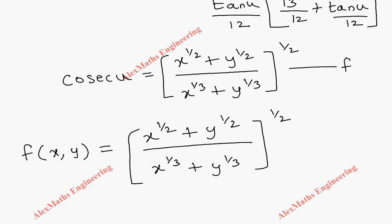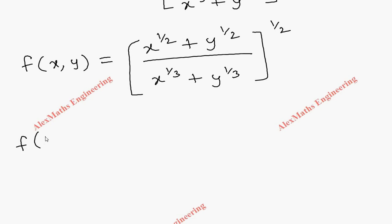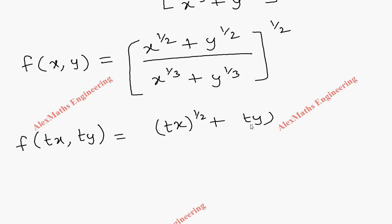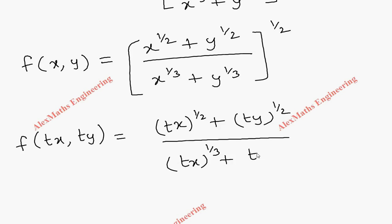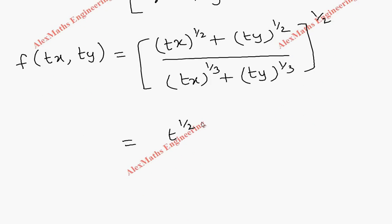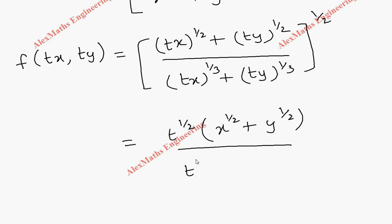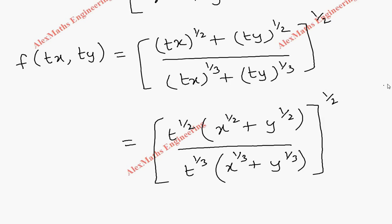To check whether it's a homogeneous function or not, we replace x with tx and y with ty. So the numerator becomes (tx)^(1/2) + (ty)^(1/2) and the denominator becomes (tx)^(1/3) + (ty)^(1/3), all to the power 1/2. In the numerator we can take t^(1/2) common, and in the denominator we can take t^(1/3) common, leaving (x^(1/3) + y^(1/3)) inside the power 1/2.